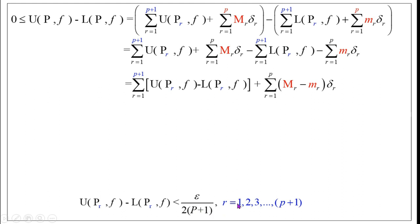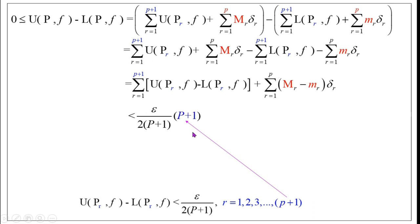This holds for r = 1, 2, …, p+1. Therefore, summing over p+1 terms: Σᵣ₌₁^{p+1} [U(Pᵣ,f) − L(Pᵣ,f)] < (p+1) · ε/(2(p+1)) = ε/2. The (p+1) factors cancel because we specifically chose ε/(2(p+1)) for each of the p+1 subintervals.